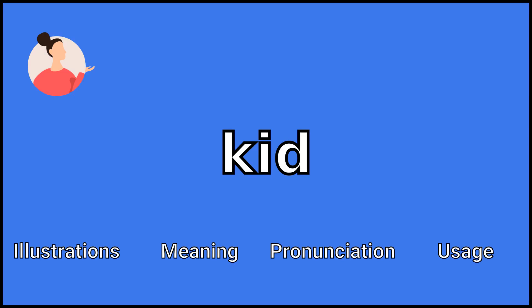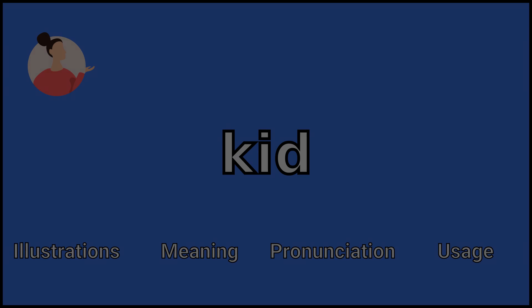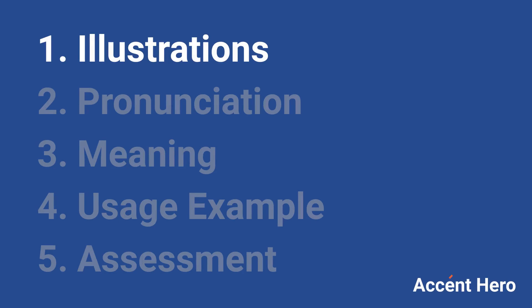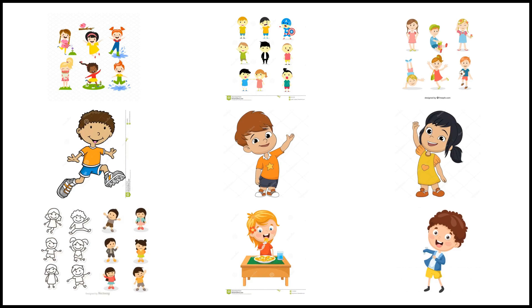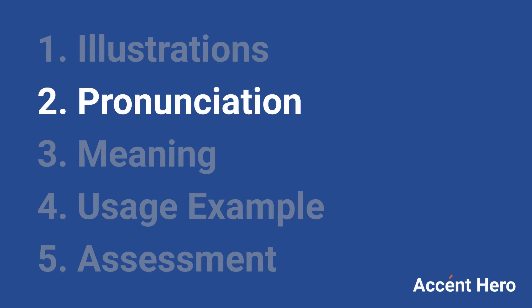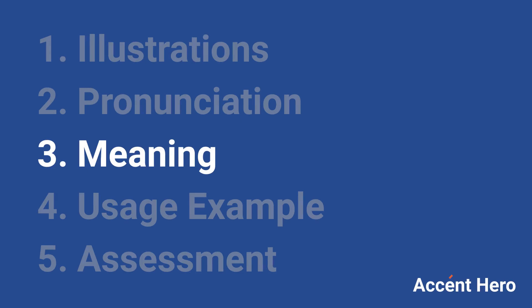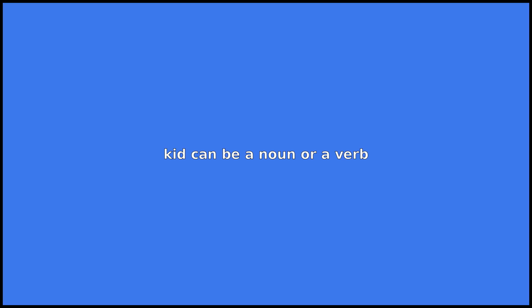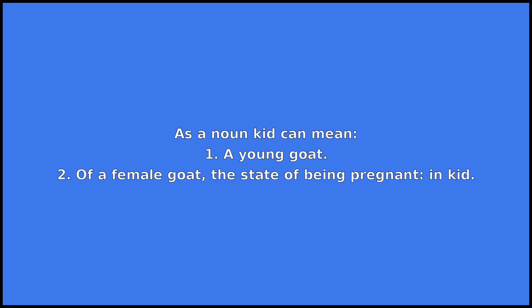KID can be a noun or a verb. As a noun, KID can mean: 1. A young goat. 2. Of a female goat, the state of being pregnant, in KID.